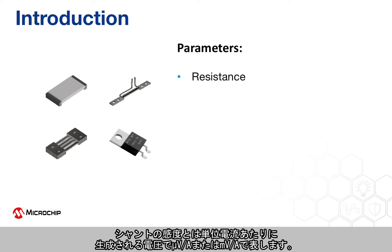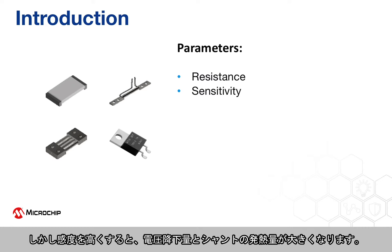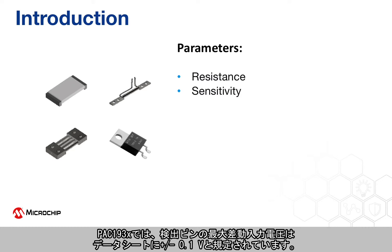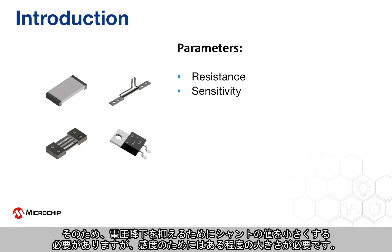The sensitivity of the shunt is how much voltage is generated per unit of current — microvolts or millivolts per amp. A higher sensitivity requires a higher resistance value, but this comes with a larger voltage drop and more heat dissipated by the shunt. The maximum differential input voltage on the sense pins is specified in the datasheet as plus/minus 0.1 volts — this is the maximum voltage drop allowed. The shunt is placed in series with the electrical load, so the value must be kept small to minimize voltage drop, but high enough for better sensitivity.